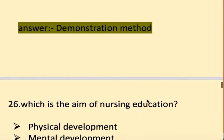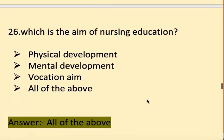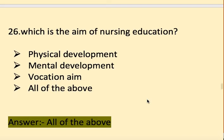Next question: Which is the aim of nursing education? Options: physical development, mental development, vocational aim, and all of the above. The right answer is all of the above.